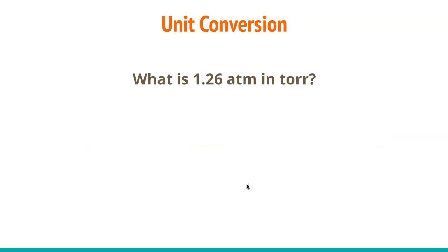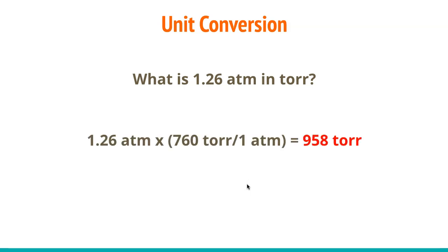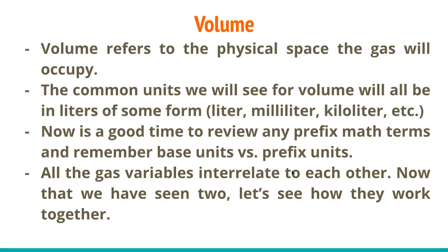Here's another one: what is 1.26 atm in torr? Take 1.26 atm and multiply by 760 torr per 1 atm. The atm units cancel, giving 958 torr. Same premise — three sig figs in, three sig figs out.